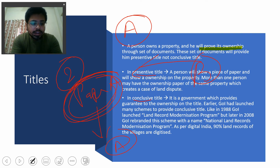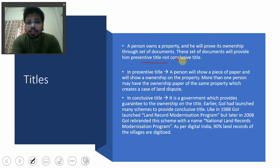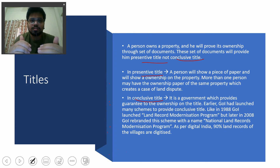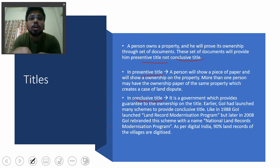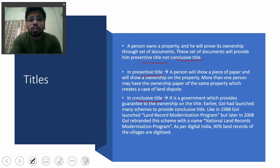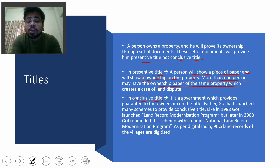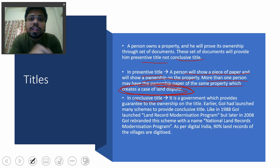So what are the two types of title? One is the presentive title and the other is the conclusive title. The presentive title is a disputed title — more than one person may show ownership papers for the same property, which creates the problem of land disputes within India.